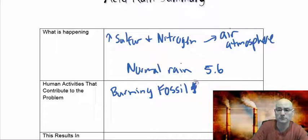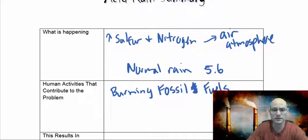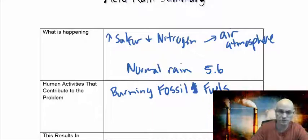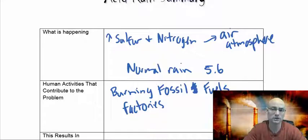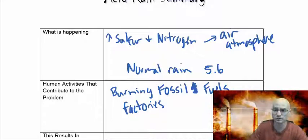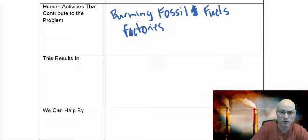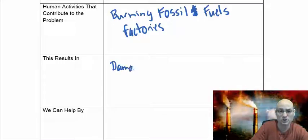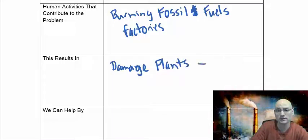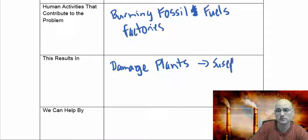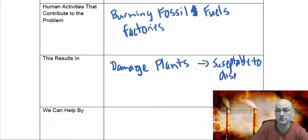What are some activities that can contribute to the problem? Again, burning fossil fuels. We really got to get away from those fossil fuels because they really are one of the biggest problems we have today. A lot of these environmental problems will start to slip away, especially in the factory region. What does it result in? The rainwater that's acidic will damage plants or at least leave them susceptible to be attacked by disease.